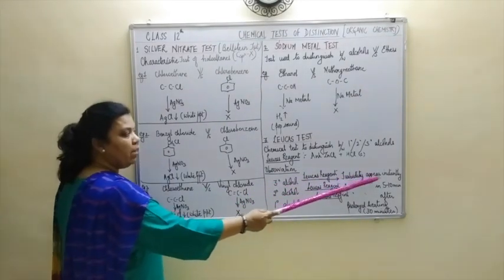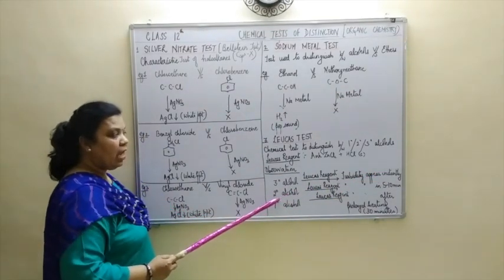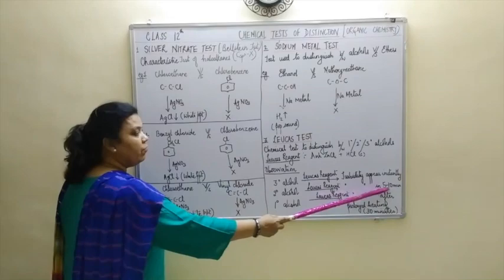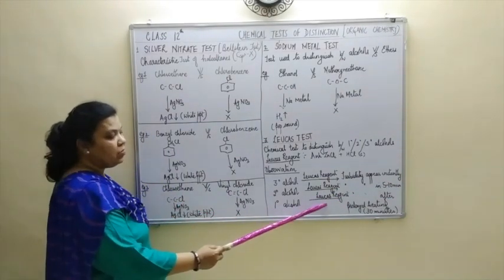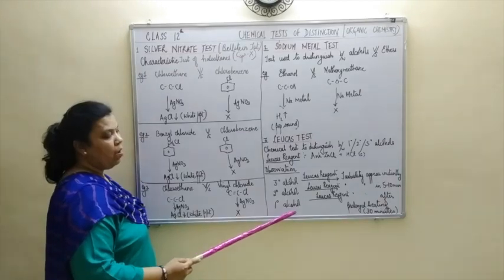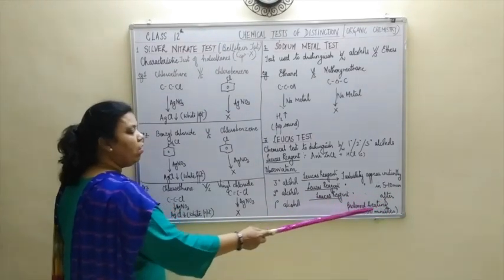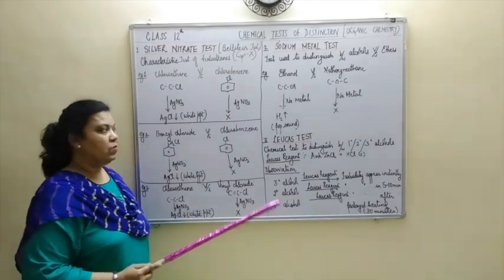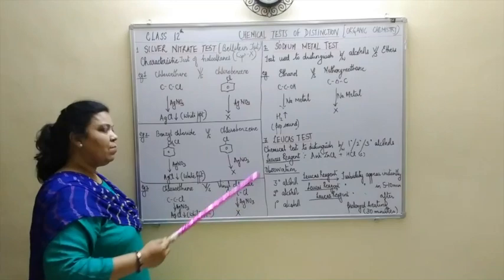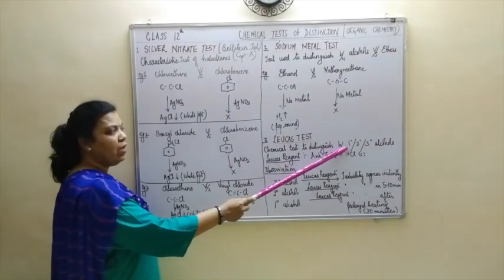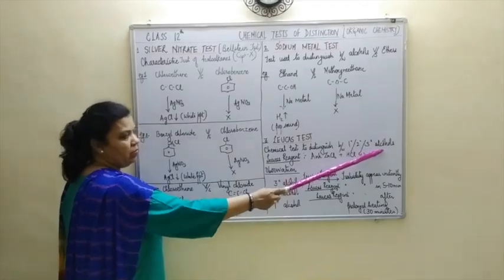On addition of Lucas reagent to tertiary alcohol, turbidity appears instantly. On addition of Lucas reagent to secondary alcohol, it appears after 5 to 10 minutes. Whereas when you add Lucas reagent to primary alcohol, you will get turbidity after 30 minutes or after prolonged heating. So the time taken for turbidity to appear is the basis to distinguish between primary, secondary, and tertiary alcohols.